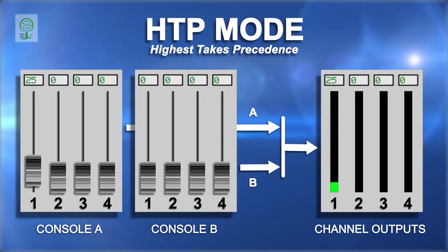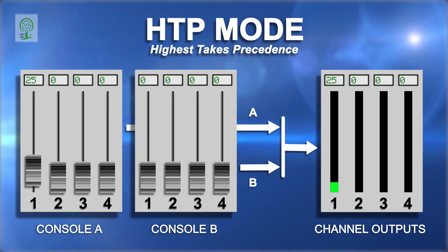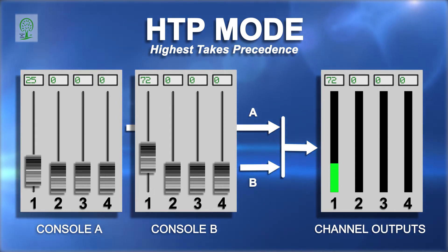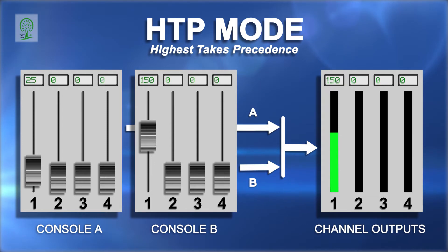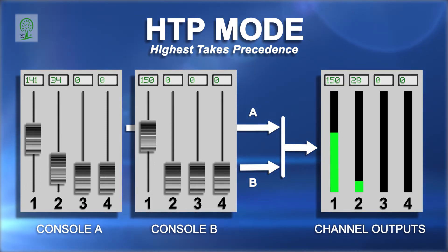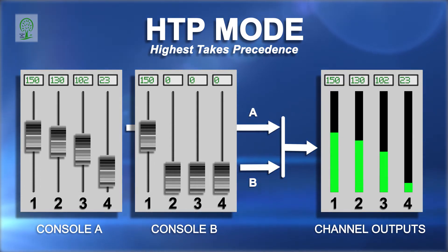and input B is 0, then the output level increases to 25. If input B, channel 1, then increases to a level of 150, the output will increase from 25 to 150.